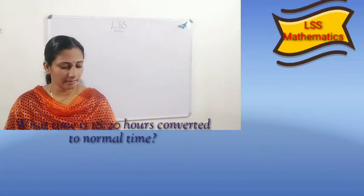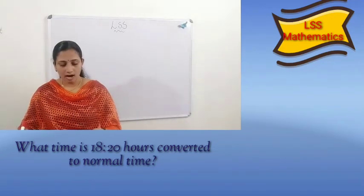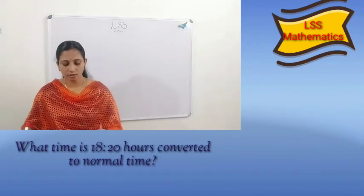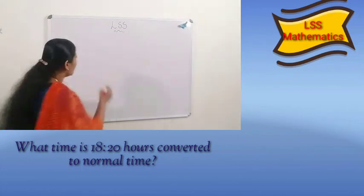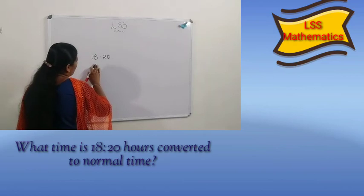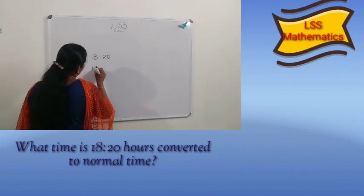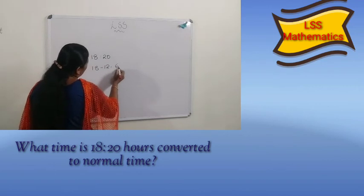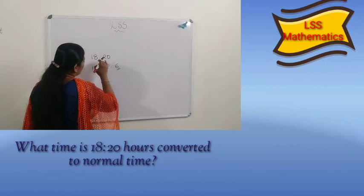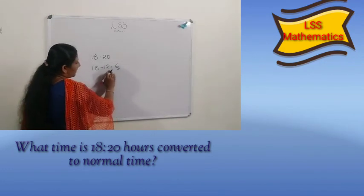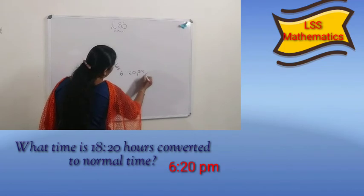The next question: what time is 18:20 converted to normal time? 18:20 is a 24-hour clock time and you want to convert it to a 12-hour clock system. How do we convert this? 18 minus 12 is 6. So the answer is 6 hours, and the minutes stay the same — 20 minutes. So, 6:20 PM is the answer.